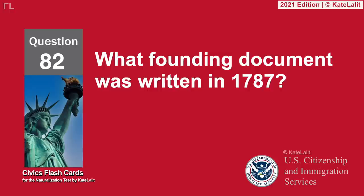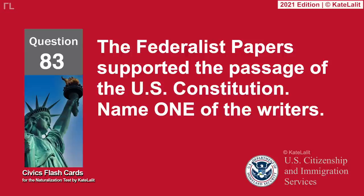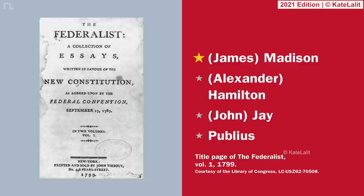What founding document was written in 1787? The U.S. Constitution. The Federalist Papers supported the passage of the U.S. Constitution — name one of the writers: James Madison, Alexander Hamilton, John Jay, Publius.